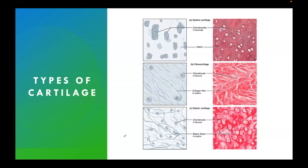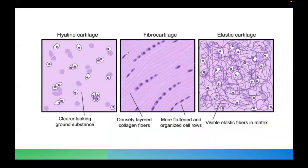These are the different types of cartilage. We have the hyaline cartilage, we have the fibrocartilage, then we have the elastic cartilage. So the three types of cartilage are: hyaline, fibrocartilage, and elastic cartilage.